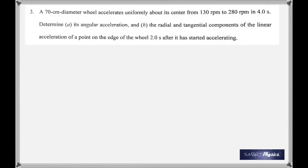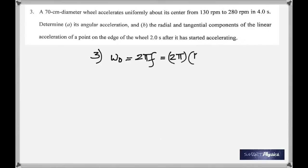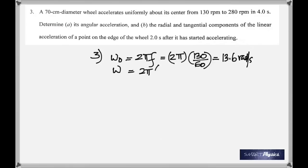Multiplying each one by 2π gives us the angular velocities. Acceleration is change in angular velocity divided by time. The initial angular velocity is 2π × 130/60 = 13.6 radians per second. The final angular speed is 2π × 280/60 = 29.3 radians per second.